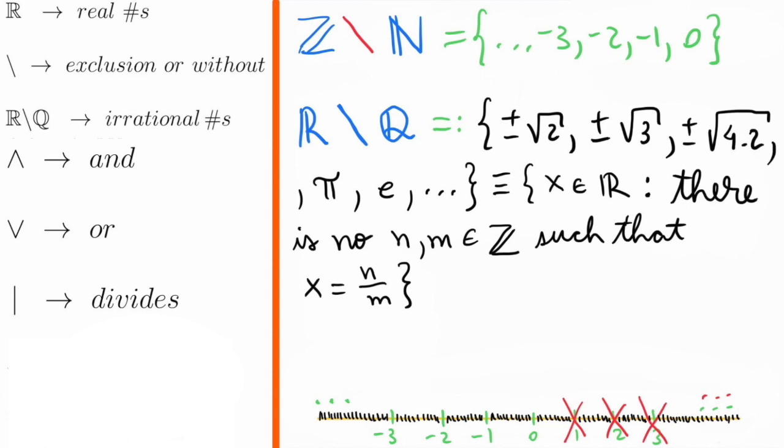This wedge symbol means the word AND. This V symbol means the word OR. And in some contexts, the vertical bar means that the number in the left divides the number in the right.